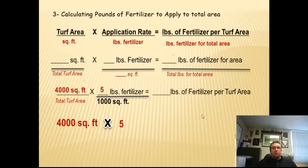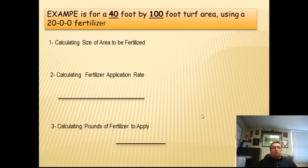What you do is take 4,000, multiply it by five, and divide it by 1,000 square feet to get how many pounds that you actually need for that given area, which would be 20 pounds of fertilizer per turf area. So now you have how much fertilizer in pounds to apply for that area.